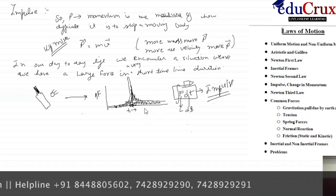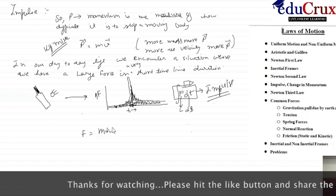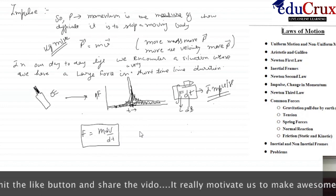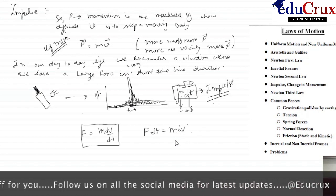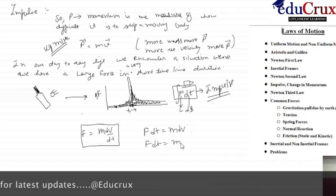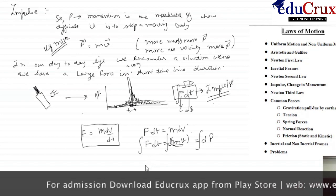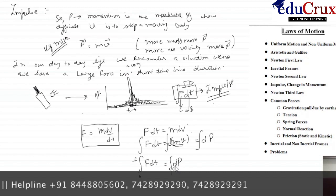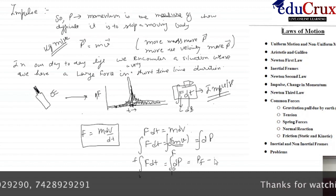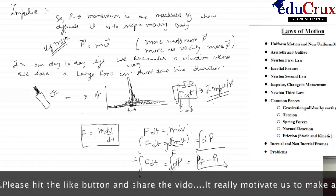Let us now relate impulse with Newton's second law. From Newton's second law, force equals m·dv/dt, so F·dt equals m·dv. If mass remains constant, we can write F·dt equals d(mv) equals dp. Integrating both sides from initial to final point, we get the integral of F·dt equals p_f minus p_i. So impulse is nothing but the change in momentum in a very short duration of time.